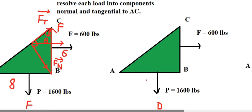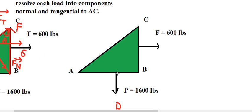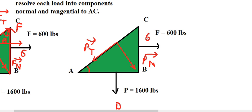Now let's go for B. If we look at B, it goes down in this way, so the two components of B should be like this. This one is Bt (tangential) and this one is Bn (normal). We apply the same formula here. We have the angle, and we have sides 6 and 8, so we put tan(beta) equal to 6 divided by 8.